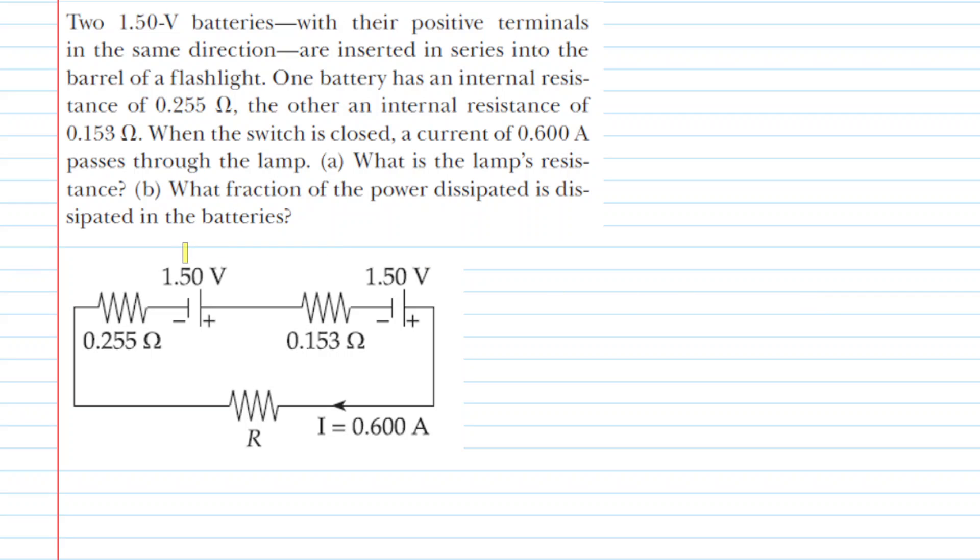We've drawn the circuit based on the given description. We have the first battery with an internal resistance of 0.255 ohms, and the second battery with internal resistance 0.153 ohms.